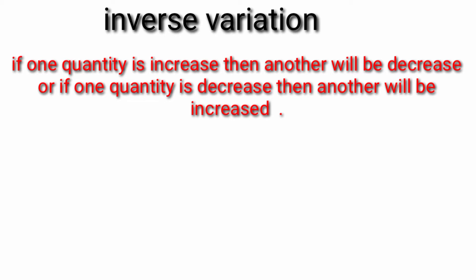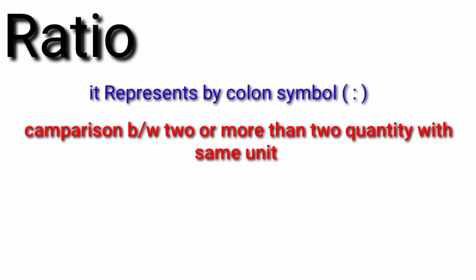Ratio: it is represented by colon symbol. Yeh hum colon symbol se zaahir kar lete hain ratio ko. Comparison between two or more than two quantity with same unit. Jab hum do ya do se ziyadah quantity ki darmian comparison kar lein aur us ke same quantity ho, same unit ho.